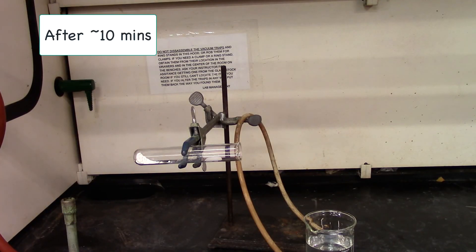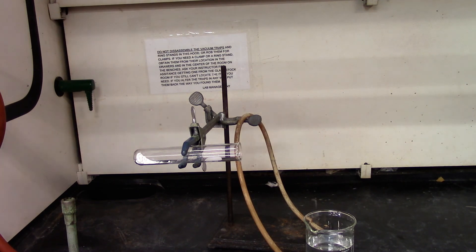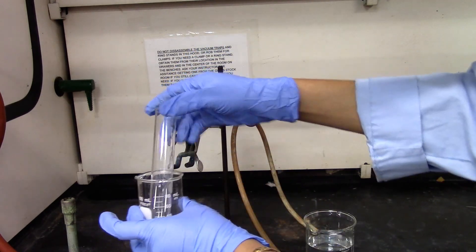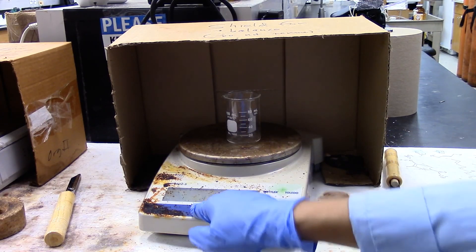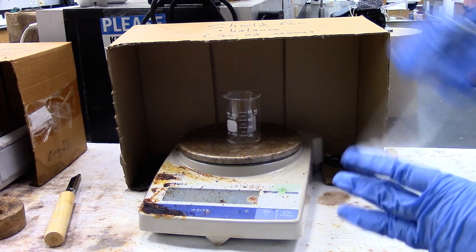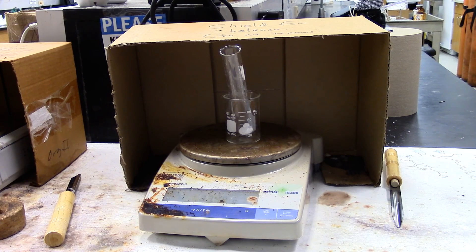The test tube has cooled down. We'll go ahead and weigh it in the balance. Place the beaker, tare the balance, and then place the test tube with the product.